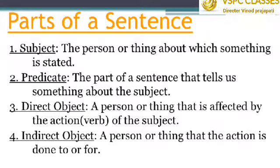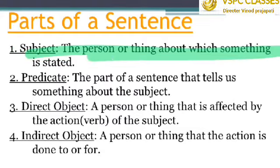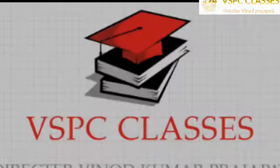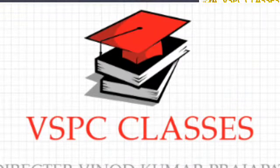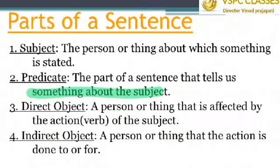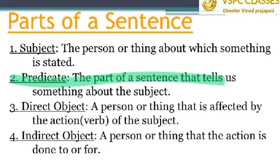Let us start with the parts of sentence first. The first one is the subject — the person or the thing about which something is stated is the subject of the sentence. For example, 'Rita is writing a letter.' Here, Rita is the subject and 'is writing a letter' is the predicate. The predicate is the part of a sentence that tells us something about the subject.